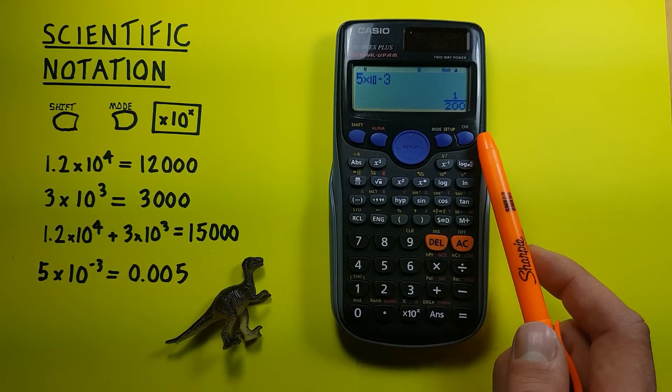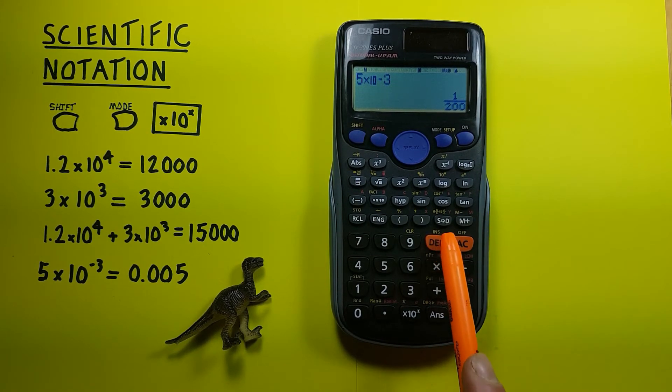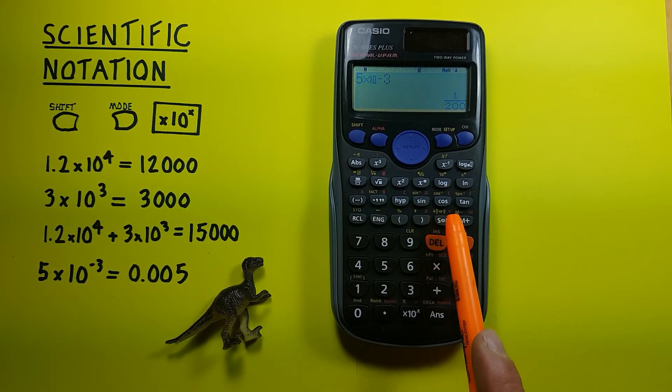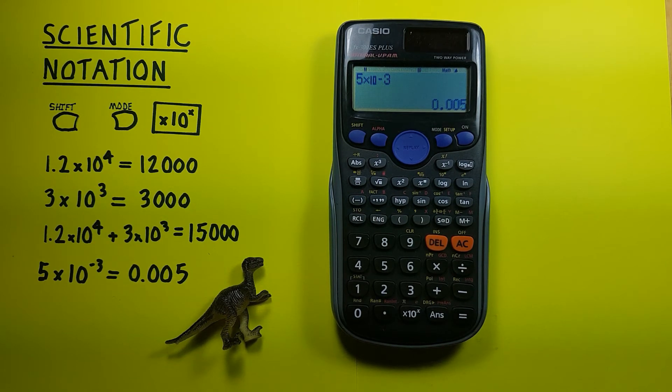Now this calculator likes to give us fractions, but don't worry, we can just press this SD key, and that will convert it to a decimal for us. So we can see that 5 times 10 to the power of negative 3 converts to 0.005.